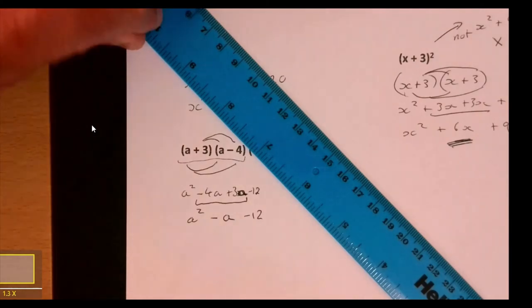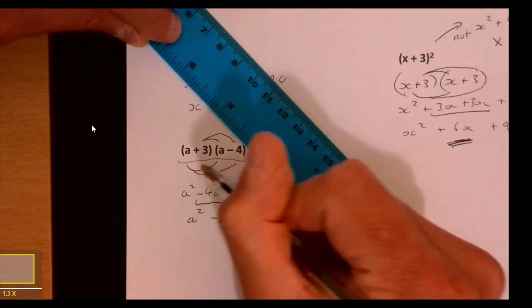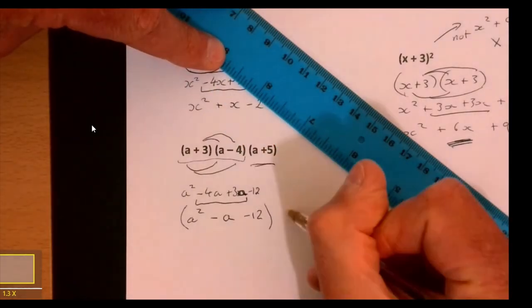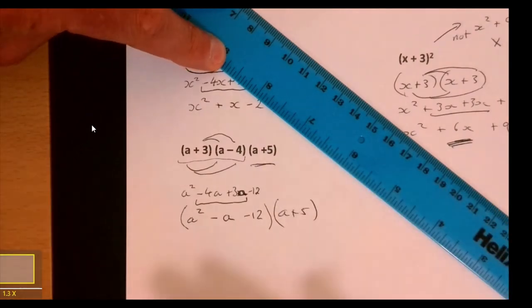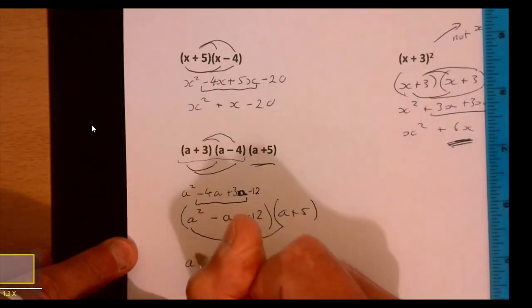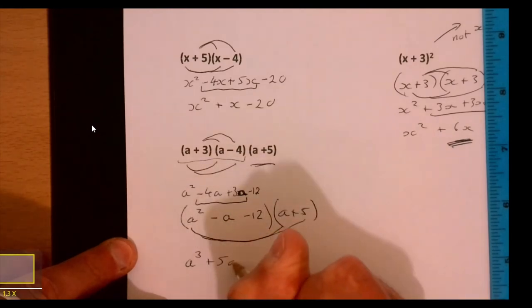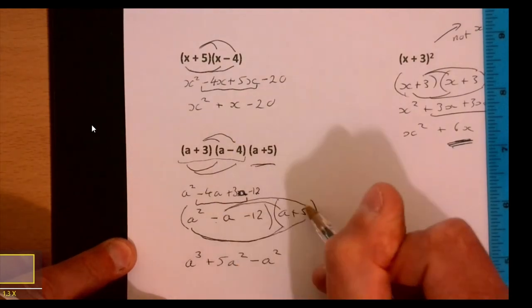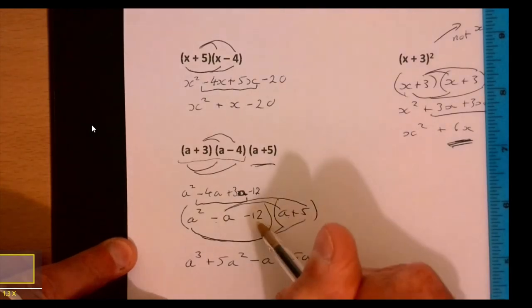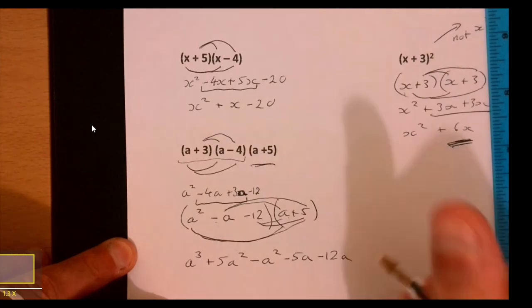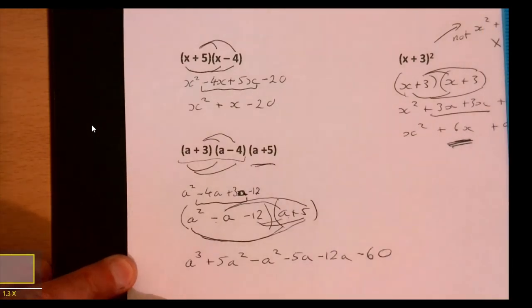A squared times a is a cubed. A squared times five is plus 5a squared. Minus a times a is minus a squared. Minus a times five is minus 5a. Then the last bit: minus 12a, and 5 times 12 is 60, so minus 60. See if anything will tidy up.